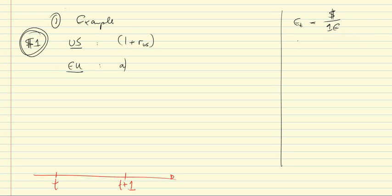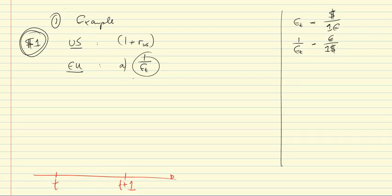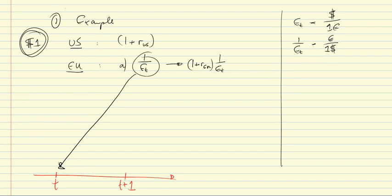The inverse of that is the euro price of a dollar. At the beginning of the period, you use your one dollar and buy whatever euros you can get, so you have at time t one-over-E_t euros. You then proceed to invest it in the euro bond, so that at the end of the period you have (1 + R_EU) times (1/E_t) euros.